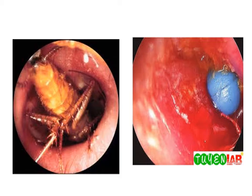Living foreign bodies include flying or crawling insects such as mosquitoes, beetles, cockroaches, and ants. The most common in my practice is ants. I often get late-night or early-morning calls from the casualty department about foreign bodies in the ear.